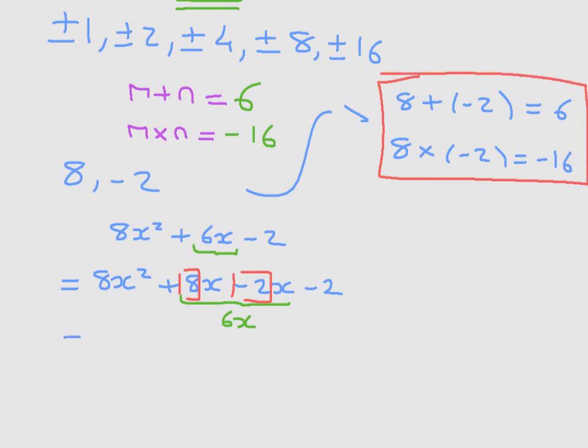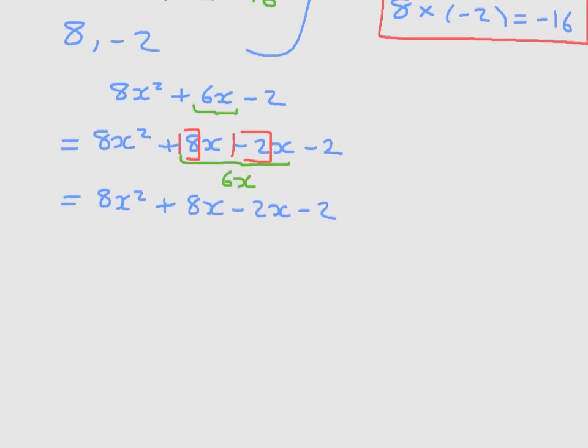So, let me just rewrite this here to make it a little less cluttered. 8x squared plus 8x minus 2x minus 2. The middle term is now split, and we can move on to the next step. The next step is to focus on the first two terms, which I'll underline here in yellow. And we need to factor them. The highest common factor of these two terms is 8x. So, I'll write this is equal to 8x times x plus 1.